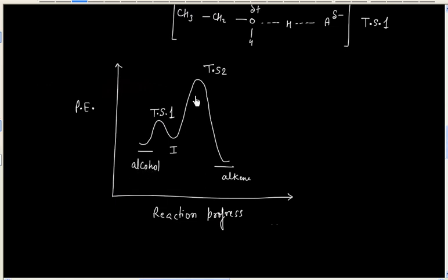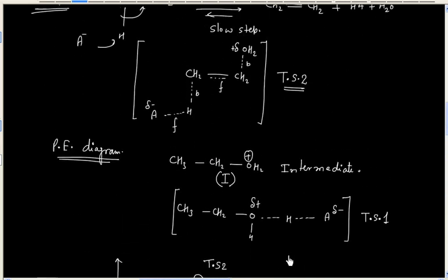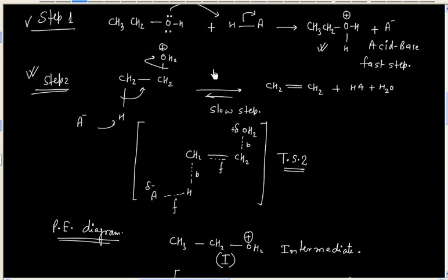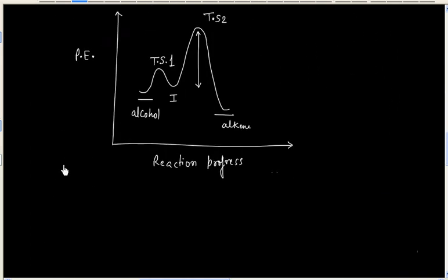For the second step, the activation energy is high, making it the slow and rate-determining step. In summary, dehydration of primary alcohol follows the E2 mechanism because the primary carbocation is very unstable. Dehydration of secondary and tertiary alcohols follows the E1 mechanism because the corresponding carbocations are stable.